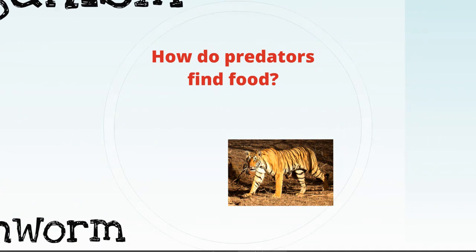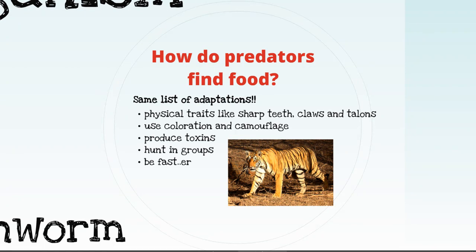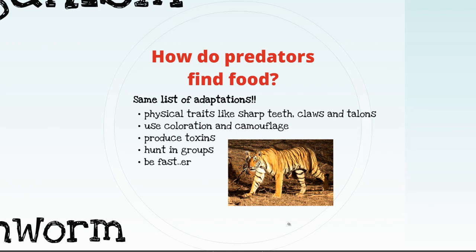With all those prey adaptations, how do predators ever find food? Ironically, they use the same list of adaptations. Predators use physical traits like sharp teeth, claws, and talons. They use coloration and camouflage — the same stripes that break up a zebra's outline break up a tiger's outline as it sneaks up on prey. Predators like rattlesnakes produce toxins. Some predators hunt in groups, and prey may be fast but predators can be even faster. This comes from predator-prey co-evolution, where the selective pressure on prey is how good predators are, and the selective pressure on predators is the new adaptations prey develop over time.